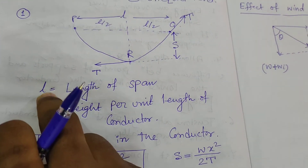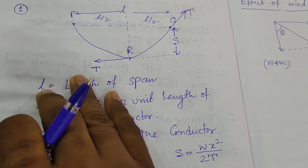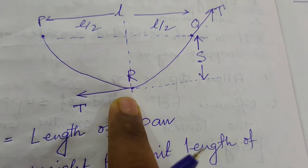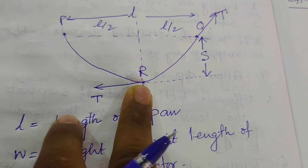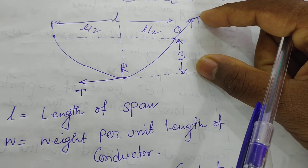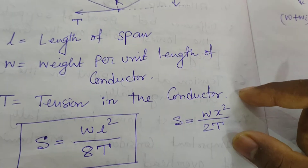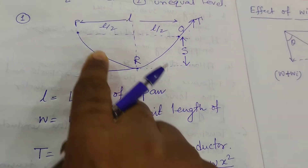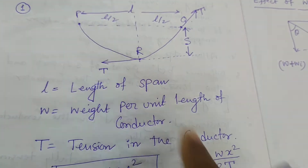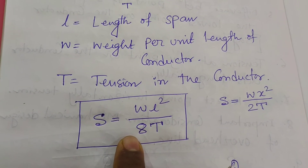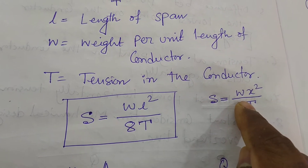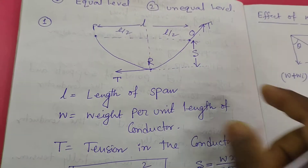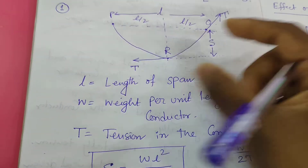We have to consider two points: X and Y. X is the distance from the lowest point, and Y is the SAG at that point. The formula is: Y equal to WX squared by 2T. If we put the condition X equal to L by 2, we get the SAG formula. So you should memorize: S equal to WX squared by 2T, where X is the horizontal distance from the lowest point and Y is the SAG.